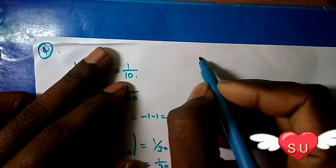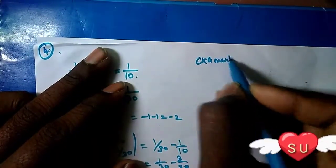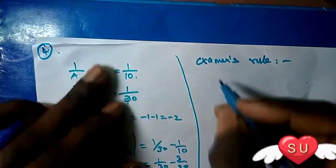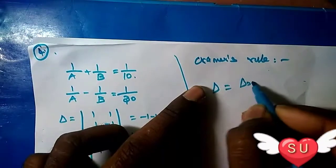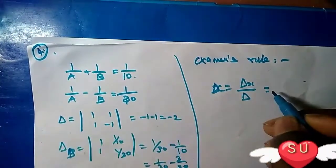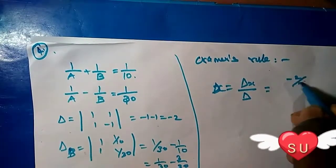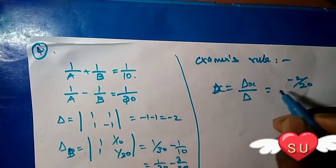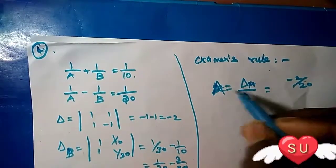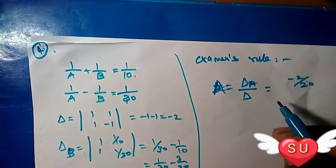Next, Cramer's rule: A equals del A divided by del. Del A value is -2/30, and del value is -2. So A equals del A divided by del.